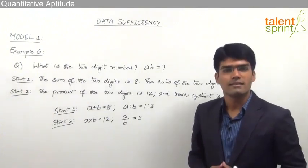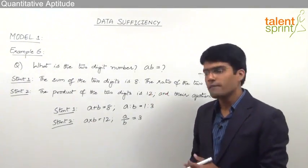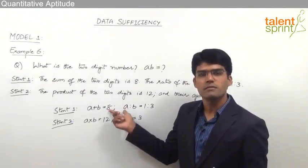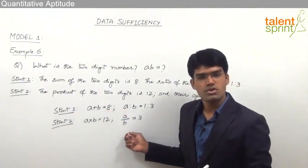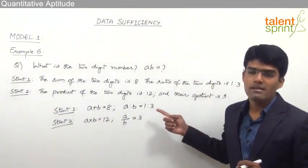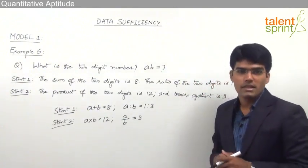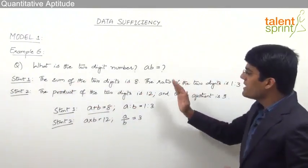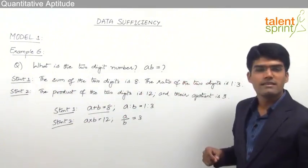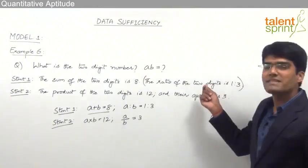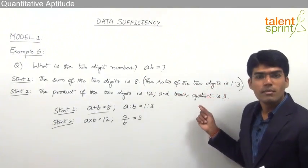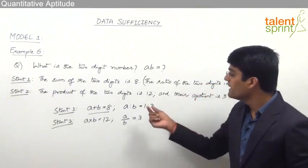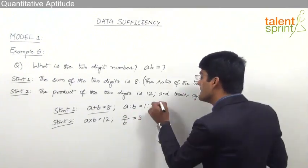But let me tell you — that is the wrong answer. This is what students generally do: they feel Statement 1 has two equations and two variables so it can be solved, and Statement 2 likewise. But that is the wrong conclusion. The twist is in the ratio. Statement 1 says the ratio of the two digits is 1 is to 3, but nowhere has it been mentioned that this ratio is A to B — it could also be B to A.